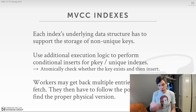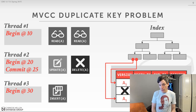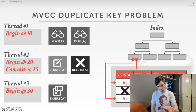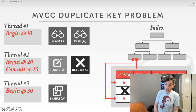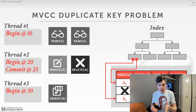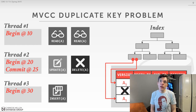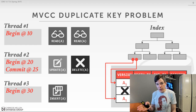When thread one does a second read on A, it gets back two results for that single key: the one it saw the first time, plus the new one thread three just installed. It has to determine which is actually visible to it. For a unique index, as soon as you find the matching version chain, you're done. For a non-unique index, you potentially have to look at all of them.